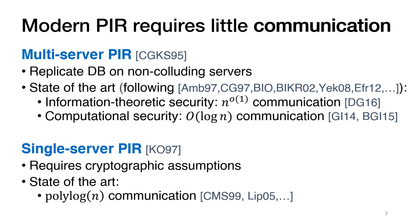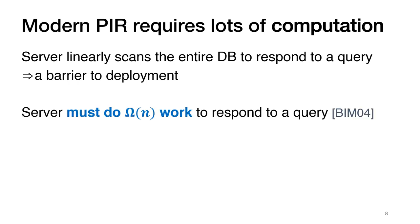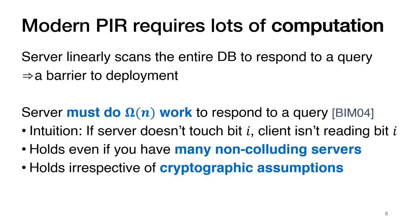So it seems that in terms of communication our situation is actually very good. However, the situation is not as good if we look at computation. In fact, in the protocols on the last slide, a server needs to scan the entire database to respond to a query, and doing linear work on every query is very expensive. It turns out this is in some sense inherent since the expected server work in any PIR protocol must be linear in the database size. The intuition is that a server must touch every bit of the database, since if it doesn't touch one of the bits while responding to a query, it can guess that this untouched bit is not the bit the client is attempting to read. And although it is not at all trivial, it also holds in the multi-server setting.